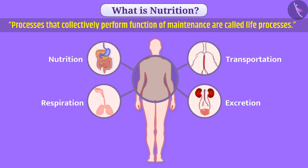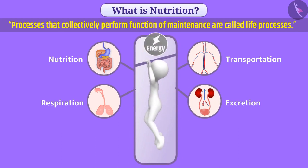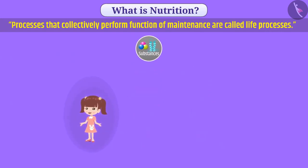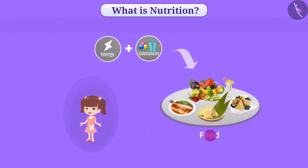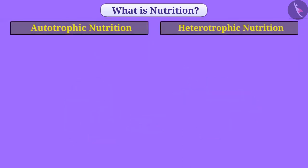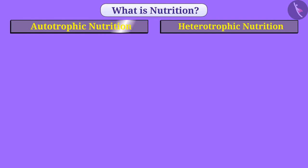Organisms need energy to perform various tasks and for necessary processes that do maintenance of life. Along with this, various substances are also needed for growth of the body. Living organisms get energy and substances from food. The process of taking food inside the body is called nutrition. On the basis of the method of eating food, there are two types of nutrition: autotrophic nutrition and heterotrophic nutrition.